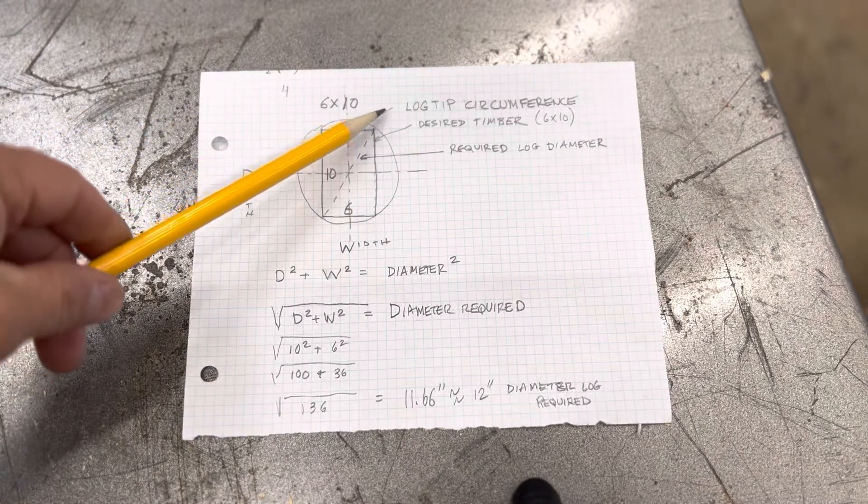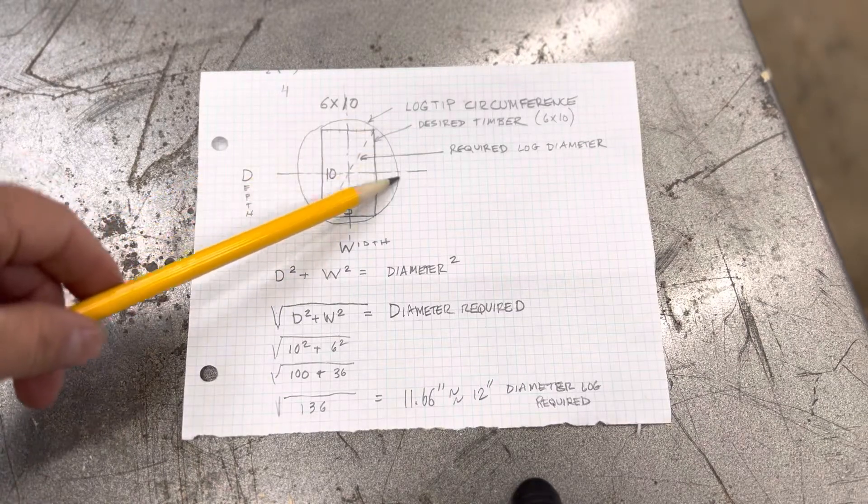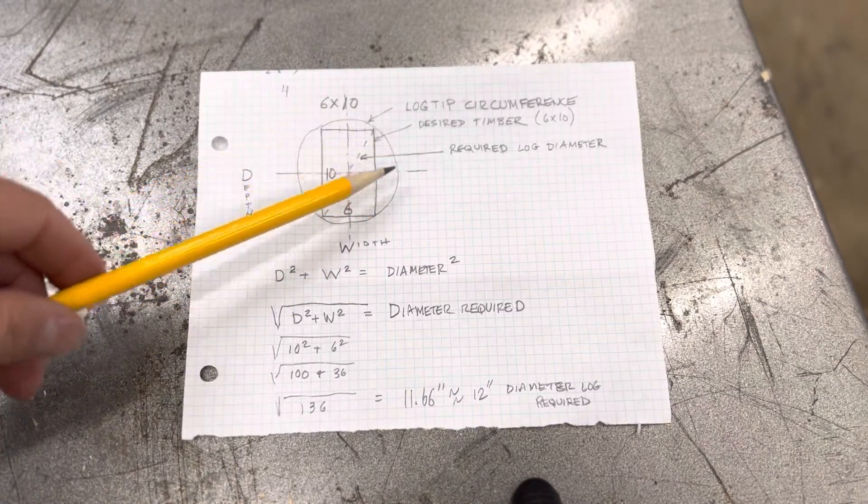So this is what we call the tip diameter. The tip diameter is the small diameter of the log. So we're looking at the end of the log, this is the log that you're looking at.